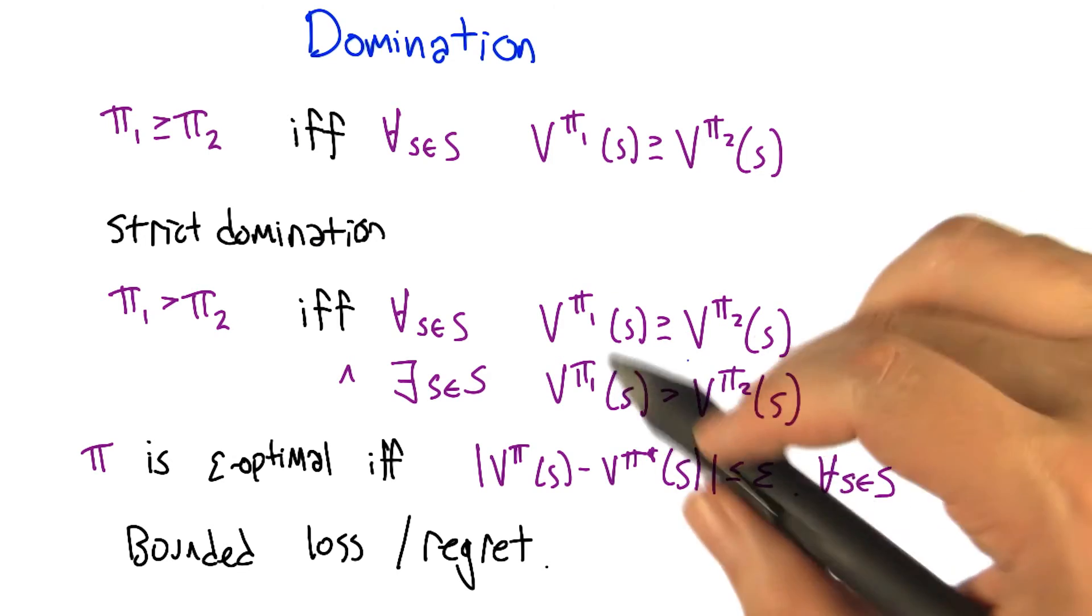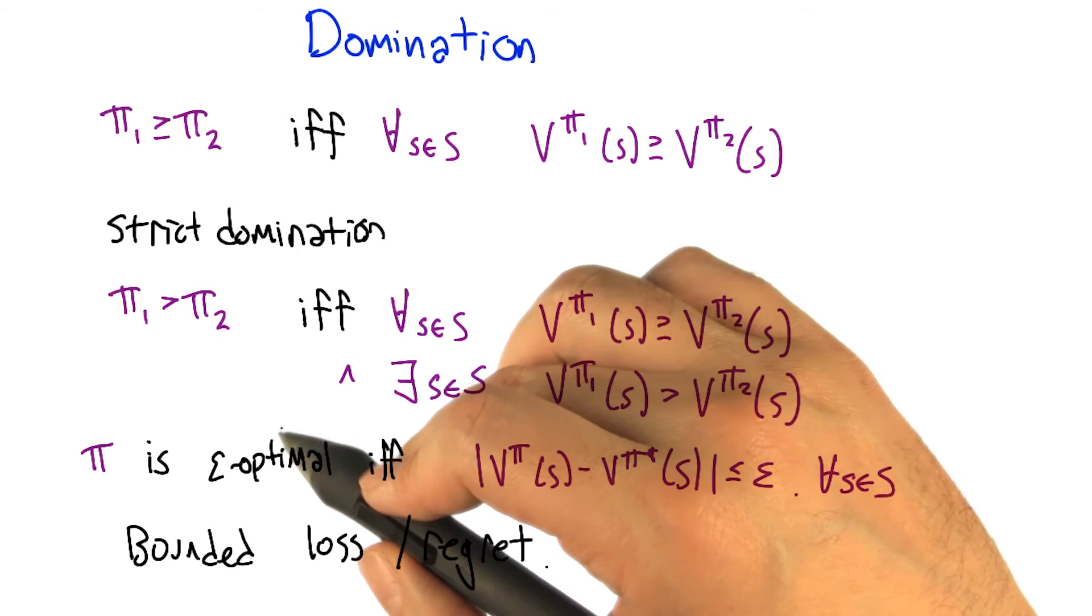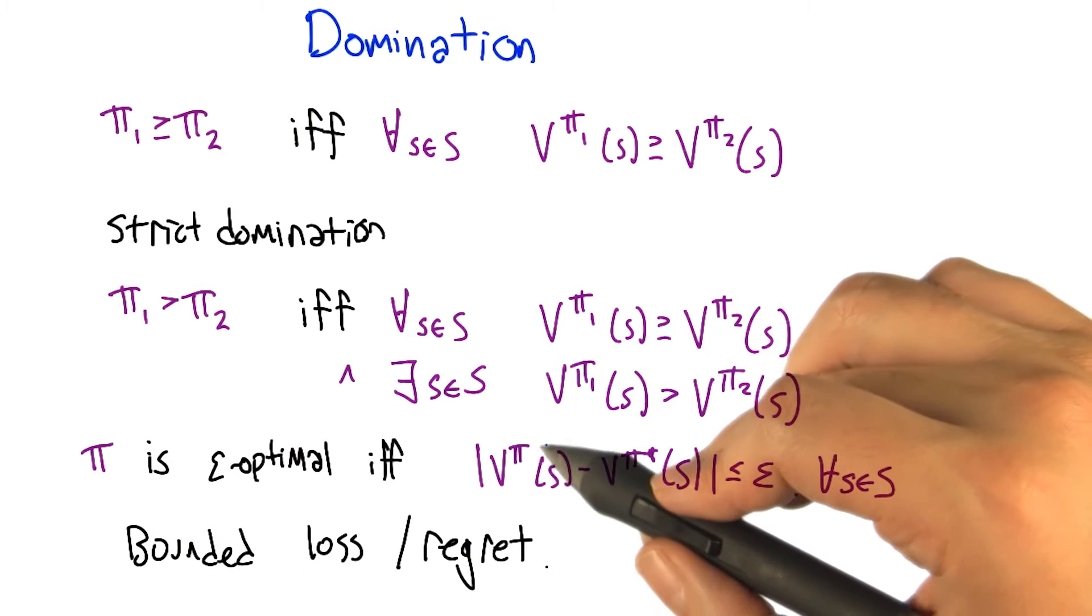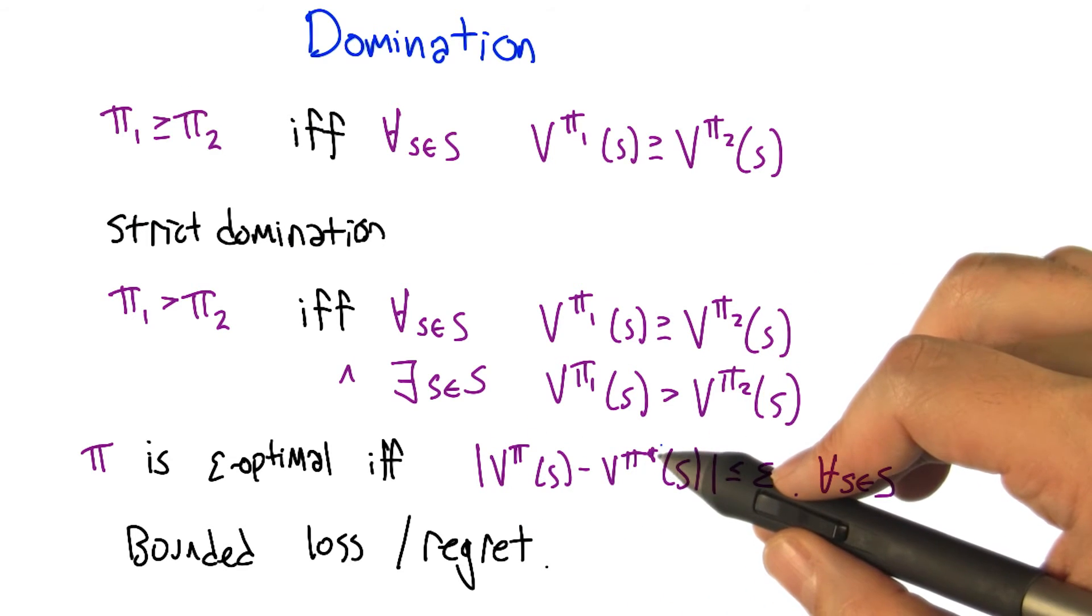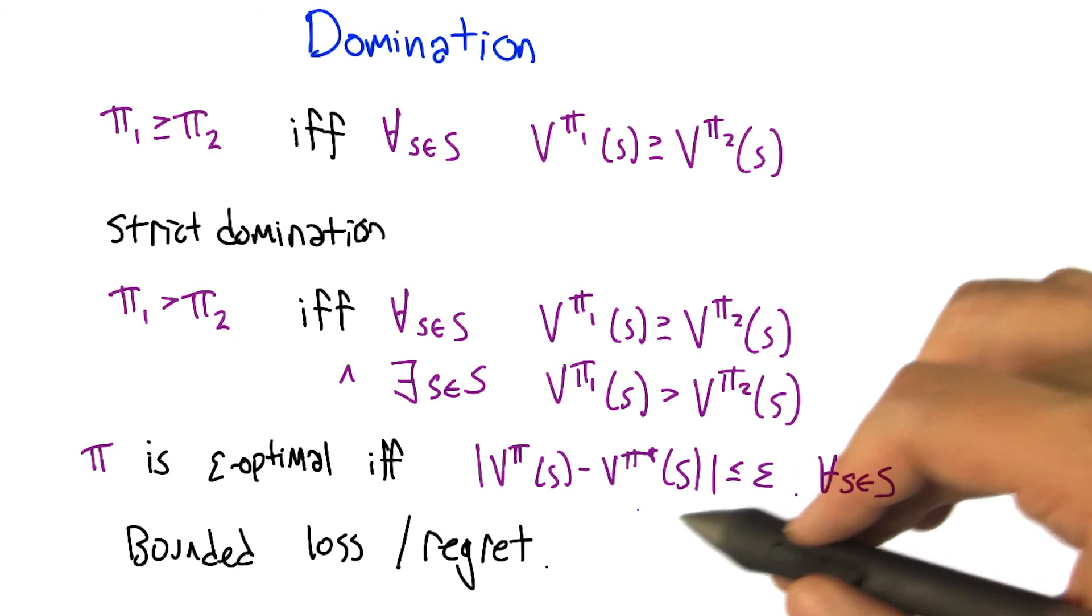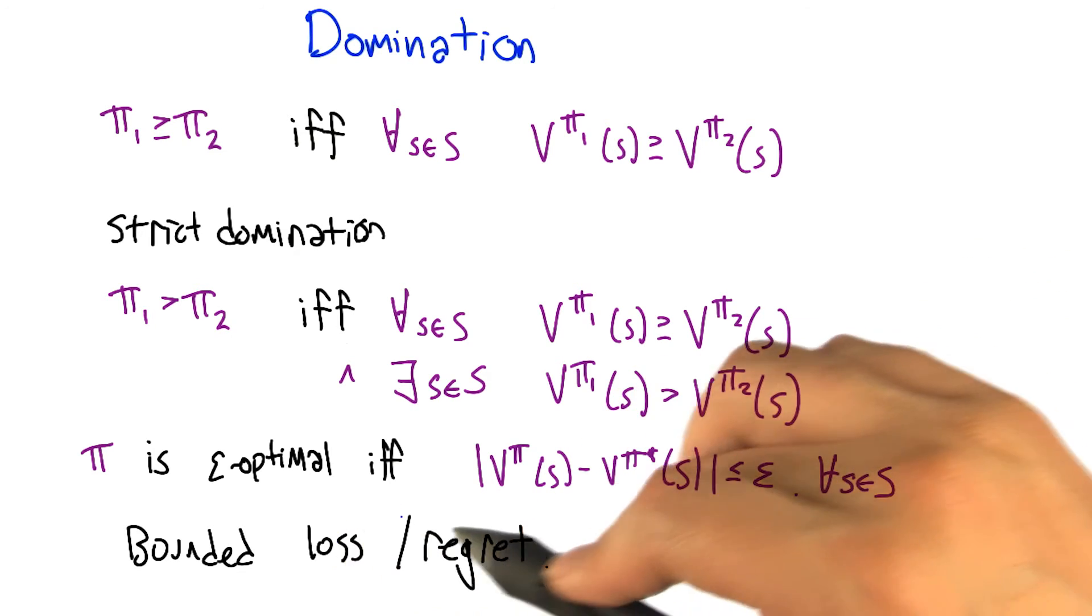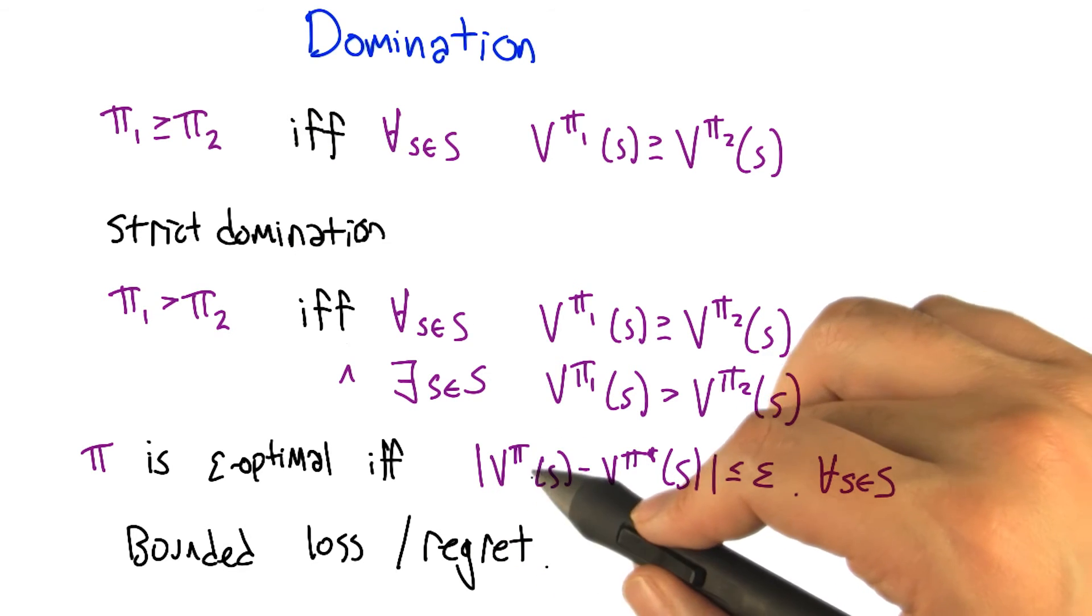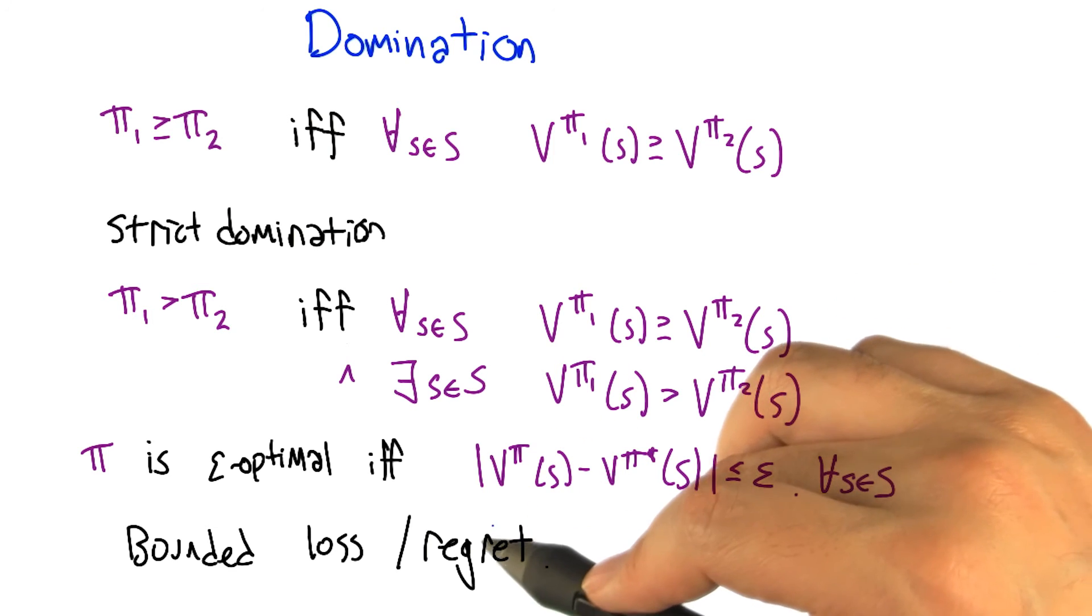And just for fun, we'll also introduce the concept of epsilon optimal policy. So a policy is epsilon optimal if it's the case that the value function for that policy is epsilon close to the value function for the optimal policy at all states. And so what this does is it gives us a concept of bounding loss or bounding regret. We'll say that a policy is nearly optimal if the amount that it loses essentially per time step is very small.